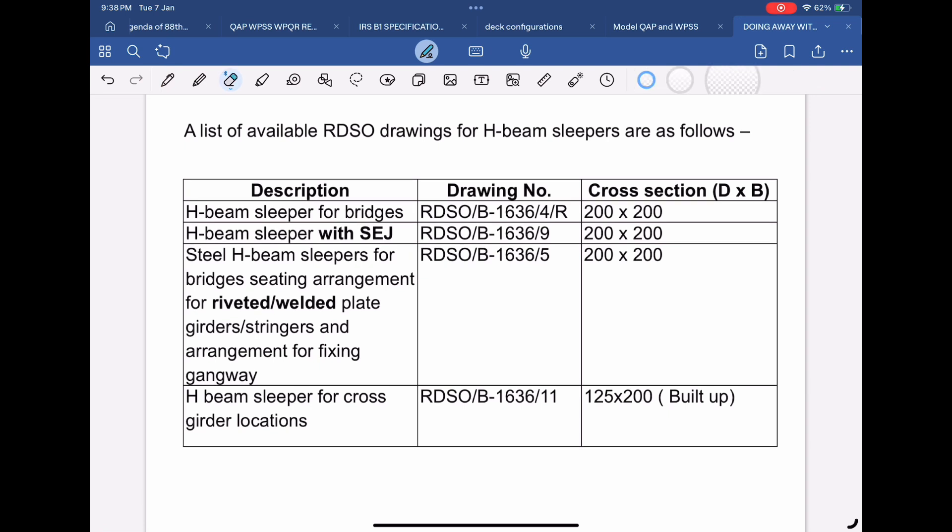First is for normal use case. Second standard drawing shows arrangement with switch expansion joints. Third is showing arrangement on riveted and bolted plate girders. These three drawings have H-beam sleeper of 200 millimeter height. Fourth is for use over cross girders of open web girder and it has got a height of 125 millimeters.